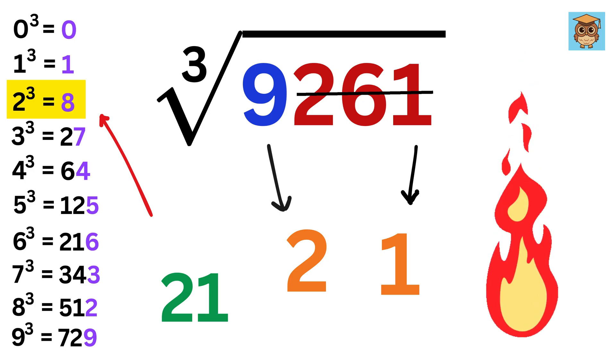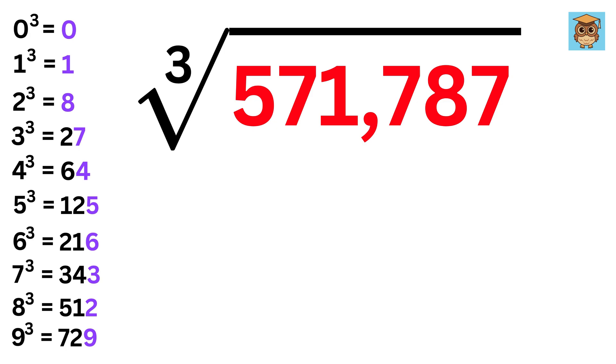Amazing! We are on fire. Now let us find the cube root of this number. We will try to do it super fast. Last digit is 7, so write 3 here. Then cancel 3 digits. Now 512 is just less than 571. So write 8 here, and we are done. The answer is 83.